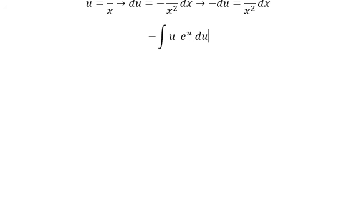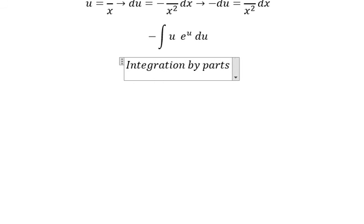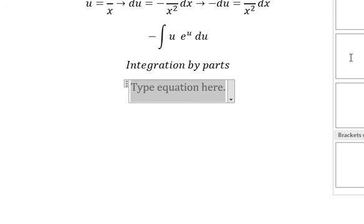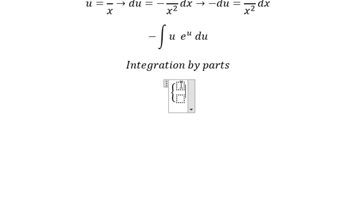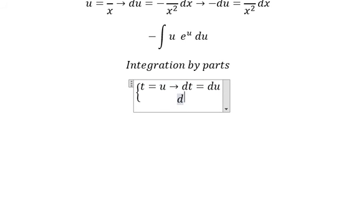And now the next one we need to use integration by parts. So I need to put t equals to u, dt equals to du. dv we have e to the power of u du. The integration of this one we got v equals to e to the power of u.